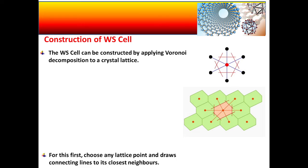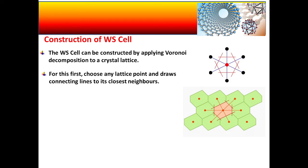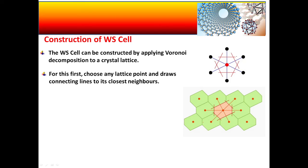For this Voronoi method, first you have to choose any lattice point and draw connecting lines to its closest neighbors. In the top figure, these red dot points are all the lattice points — seven lattice points are there. I have chosen one of them; this red one has been chosen. We connect this lattice point to the neighboring lattice points, and the black lines are those connecting lines.